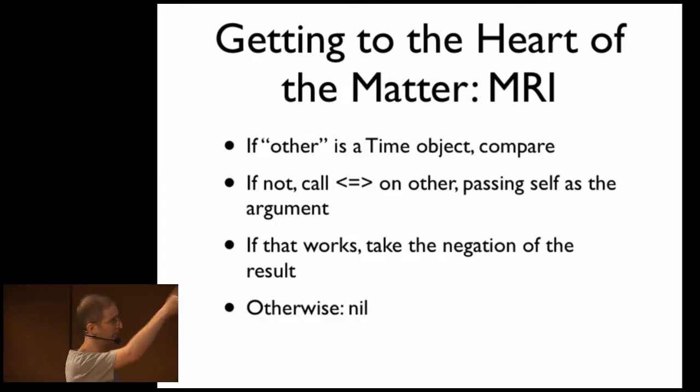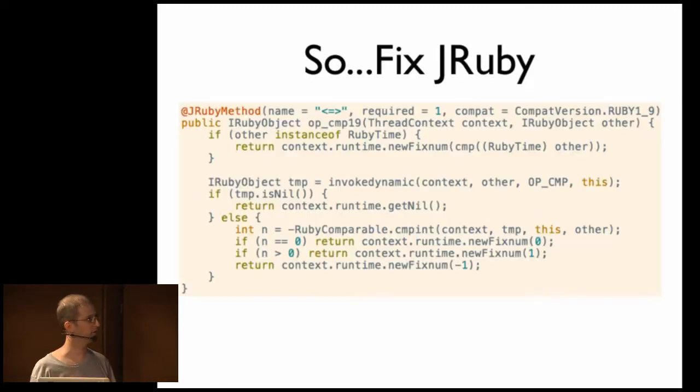Okay, so to recap, if other is a time object, do the comparison. If not, call the spaceship operator on the other, passing self as the argument. If that works, takes the negation, otherwise return nil. So this is why that piece of code works in MRI, not in JRuby. And therefore, it's fairly straightforward to fix JRuby. So this is the patch I submitted. And all it does is essentially the same thing that MRI is doing in Java instead of C. We're back in Java land, by the way.